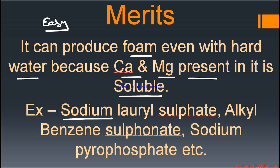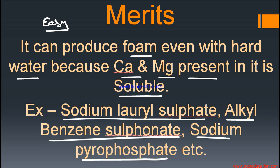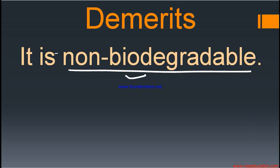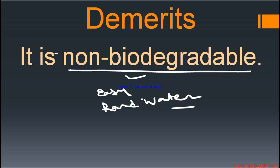Examples of detergents are sodium lauryl sulfate, alkyl benzene sulfonate, and sodium pyrophosphate. However, detergent has some demerits too: it is non-biodegradable, meaning it cannot be broken down into harmless compounds, and it causes pollution. Still, we use detergent because it is easy to handle and can work and produce foam even in hard water.